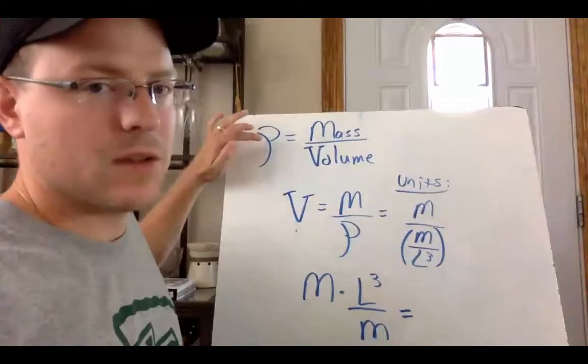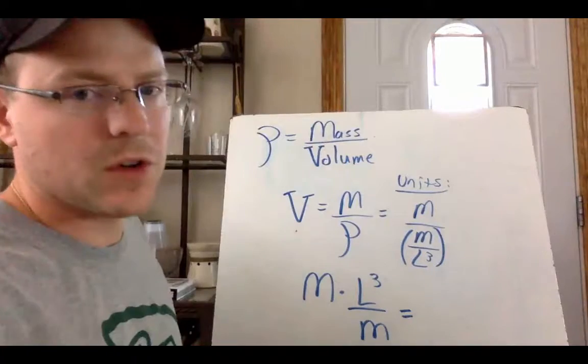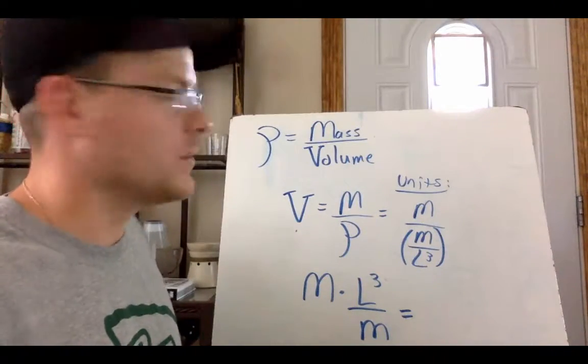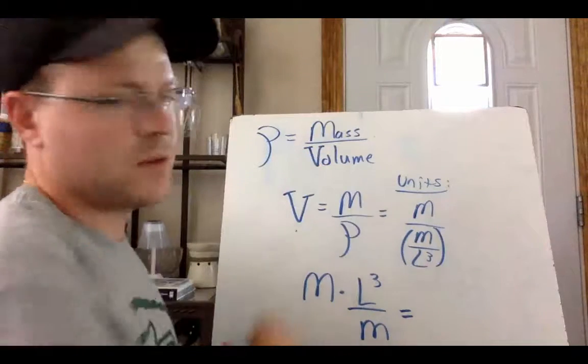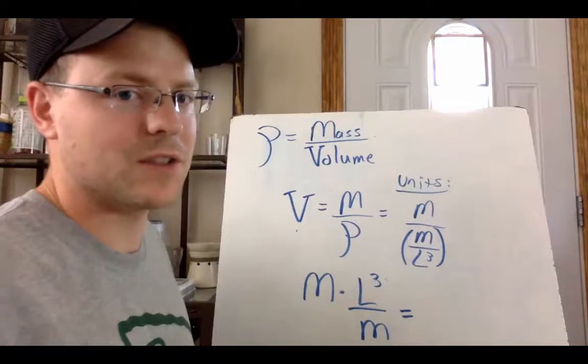So the symbol rho here is for density, which is mass per unit volume. And I wanted you to solve for the units of volume. So this V with little dashes at the top is how I do volume. It comes up a lot in physics.